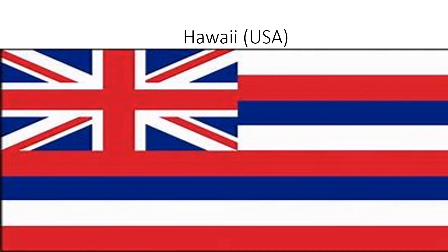Hawaii: it's also from the USA, and there's the United Kingdom flag in the corner. Next to it and under it there is white, red, and blue above each other.